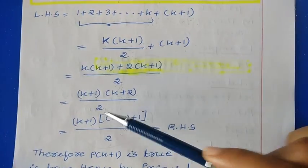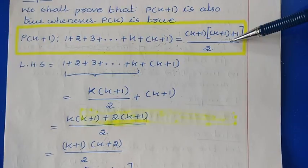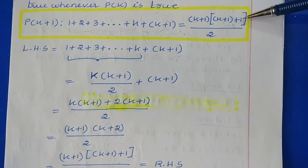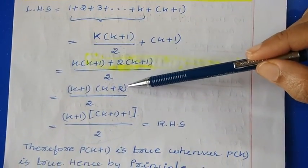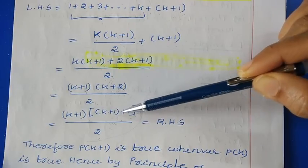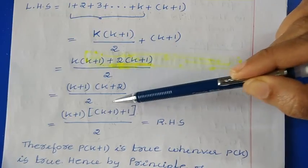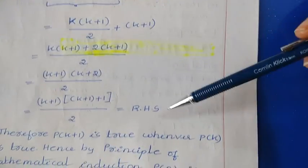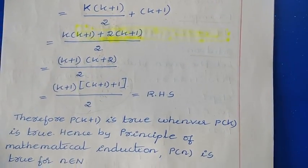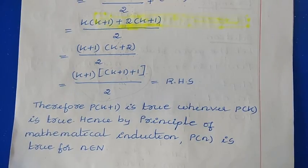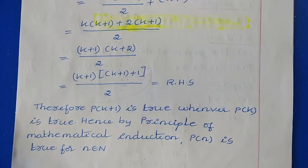We need the final result in the form of k plus 1 as on the right-hand side. We already have k plus 1, and k plus 2 can be written as k plus 1 plus 1, which equals k plus 2. So we write k plus 1 into k plus 1 plus 1 divided by 2, which is exactly our RHS. We have reached the right-hand side, proving the statement is true for p of k plus 1 using the assumption of p of k. Hence by the principle of mathematical induction, the given statement is true for all values of n, for all natural numbers.